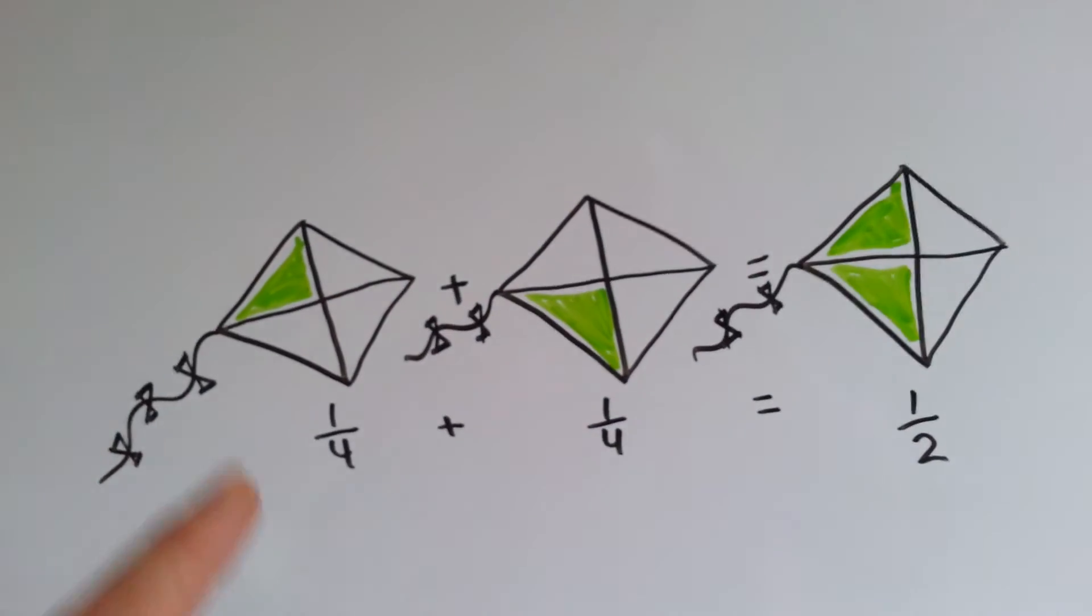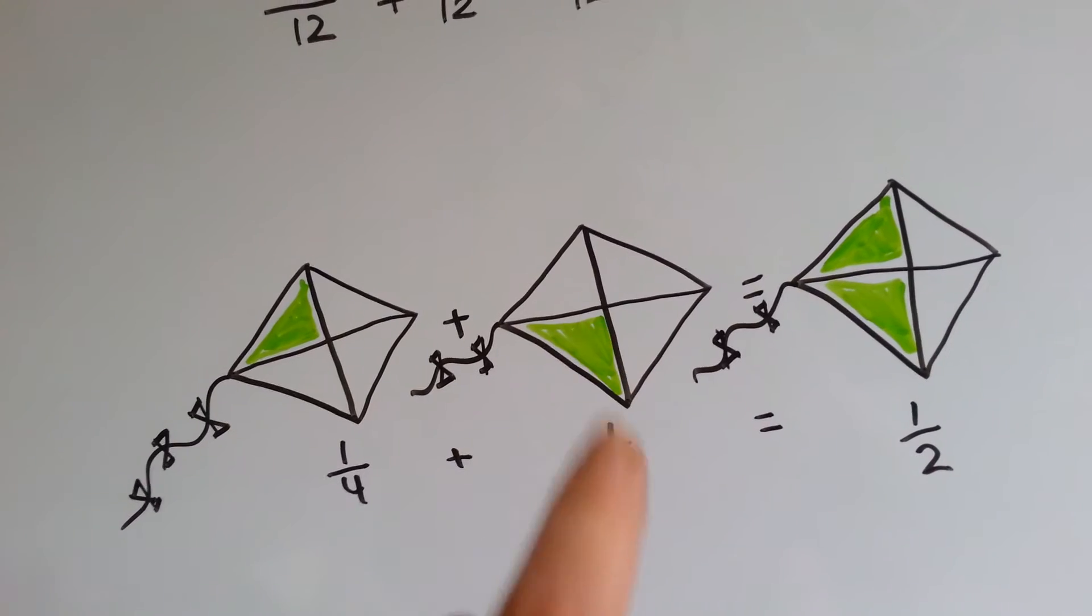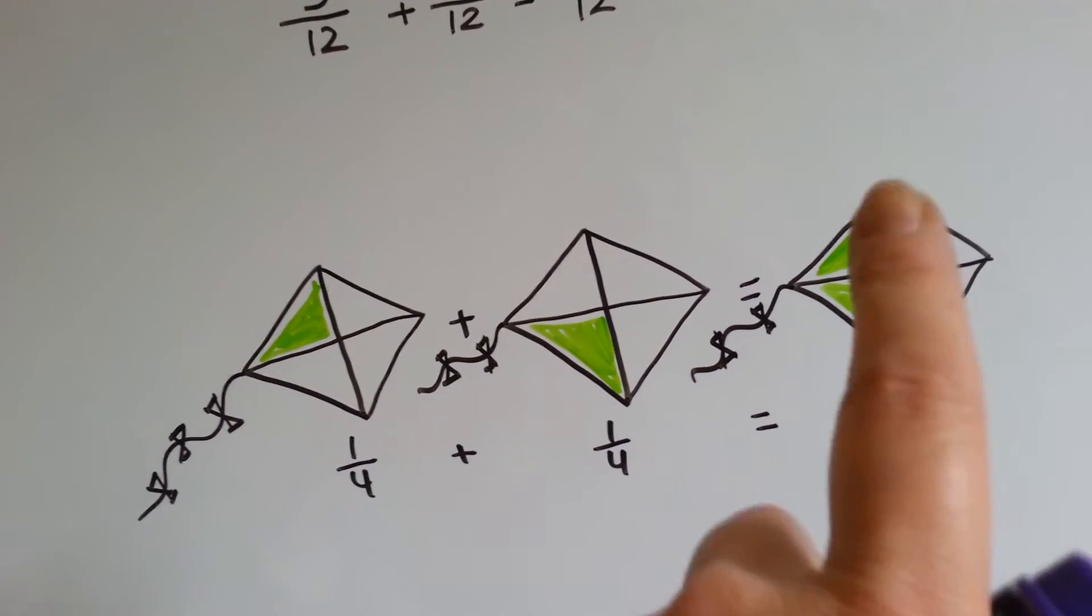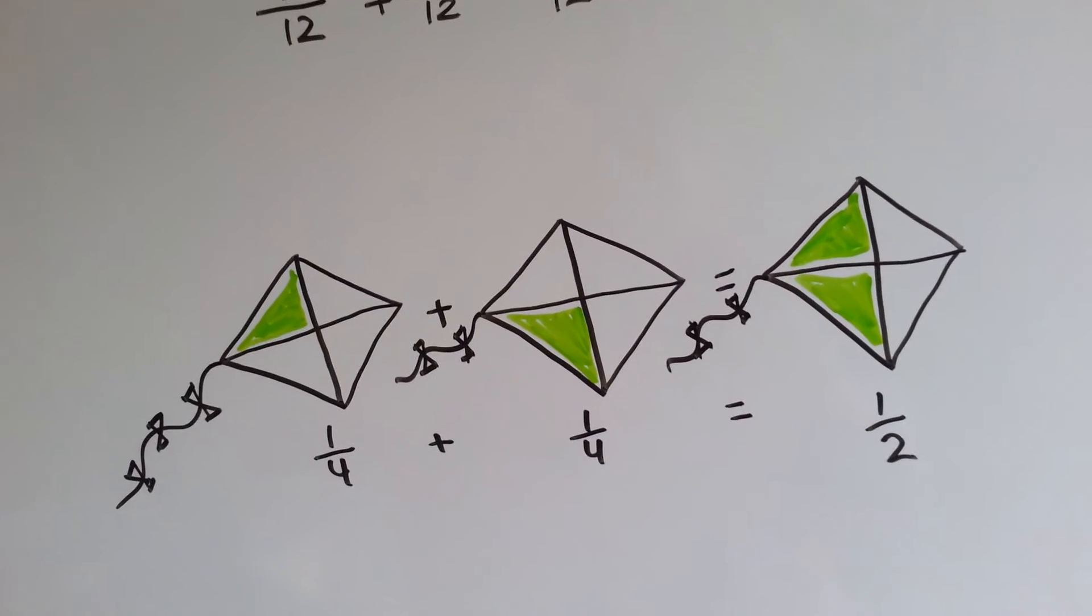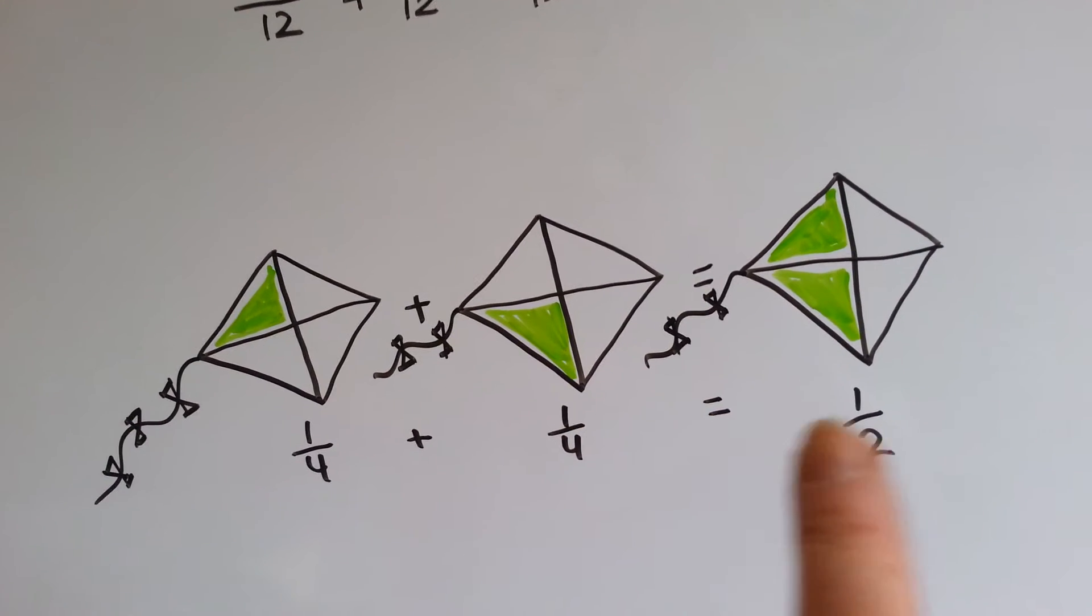Look at these kites. 1 fourth of this kite is green, and 1 fourth of this kite is green. And if you put them together, half of a kite would be green.